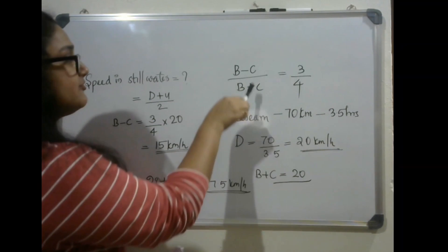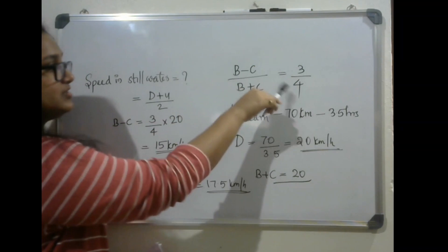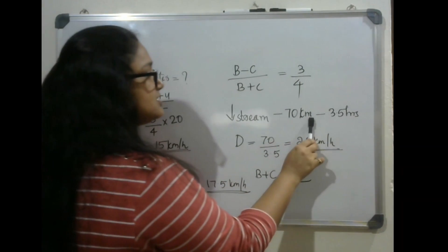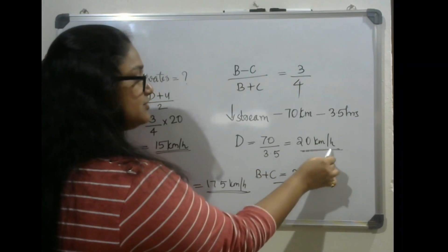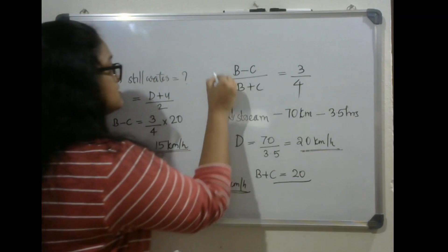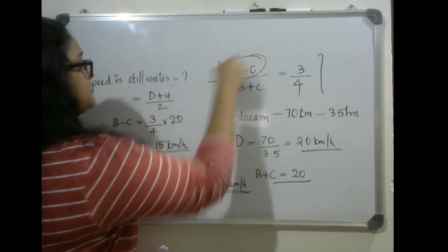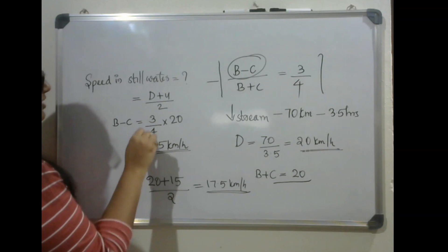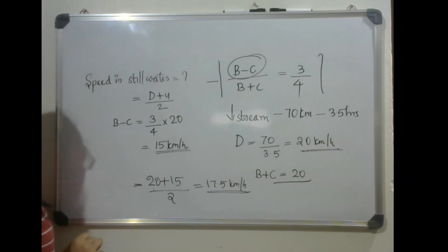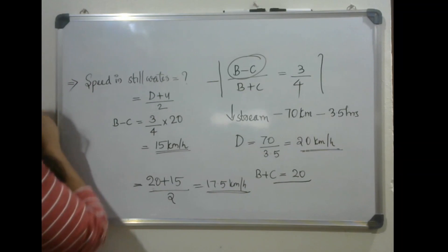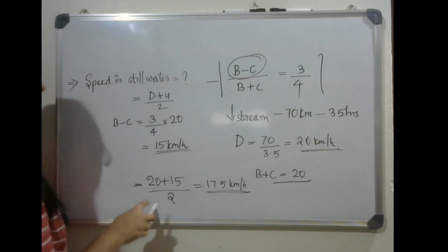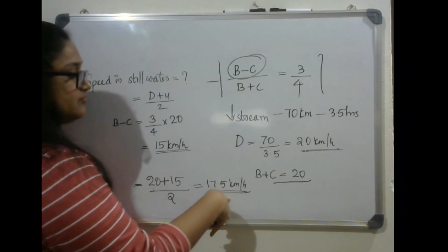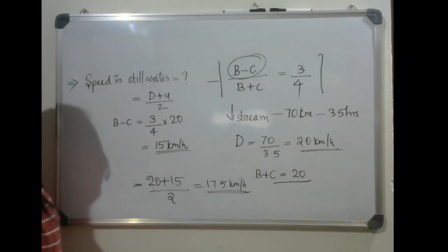So from the question we have the ratio between upstream and downstream as 3 to 4, and downstream it covers 70 kilometers in 3.5 hours. So downstream speed equals 70 by 3.5 which equals 20 kilometers per hour. From this we can find the upstream speed which equals 3 by 4 into 20, that is 15 kilometers per hour. And the speed in still water is upstream speed plus downstream speed divided by 2, which equals 20 plus 15 by 2, giving 17.5 kilometers per hour.